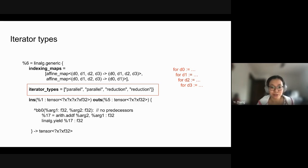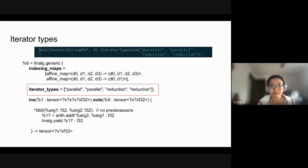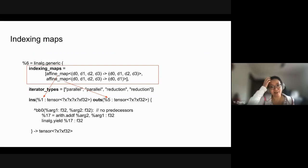That's iterator types — a pretty straightforward concept. In the source code in C++, you just need to declare a vector of string refs with the specified iterator types.